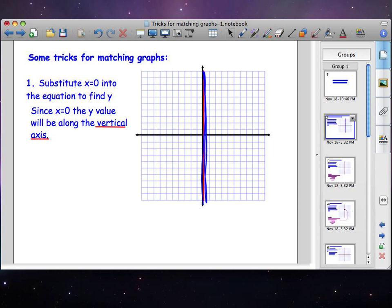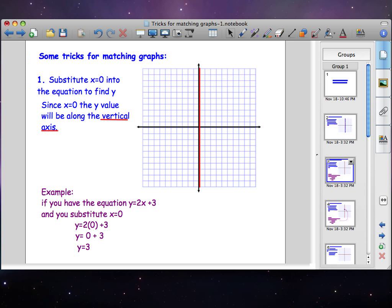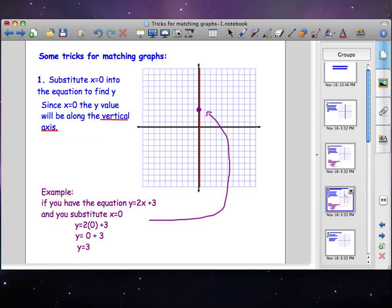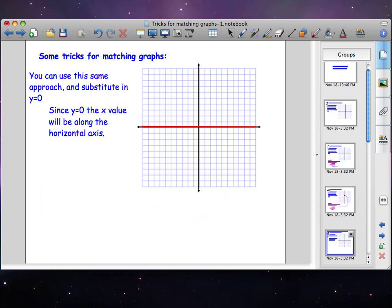So I'm just going to show you an example of how to do this. In this example, we substituted zero in for x to get that y is equal to three. Now we know exactly where this is going to go along our vertical axis because we just count up one, two, three, and then there it is on the graph.